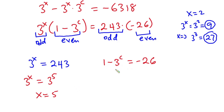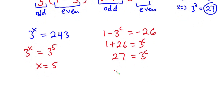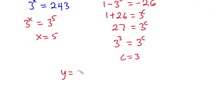Now let's solve for c. From 1 minus 3 to the power c equals negative 26, we get 1 plus 26 equals 3 to the power c, so 27 equals 3 to the power c. Since 27 equals 3 to the power 3, we can say c equals 3. Initially we said y equals x plus c. Now that we know x equals 5 and c equals 3, we plug these in: y equals 5 plus 3.